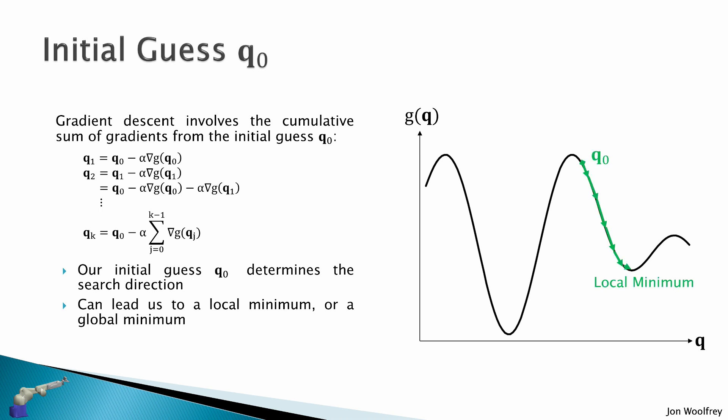So we start here for q0, we will end up here at this solution where the gradient is zero. Or we start here, we will end up with our global minimum. So this can determine whether our optimization succeeds or fails. And you will notice here that this global minimum is much smaller than this local minimum. So our initial guess will determine how well the accuracy of our inverse kinematics will be.